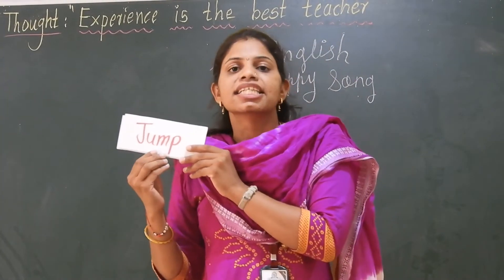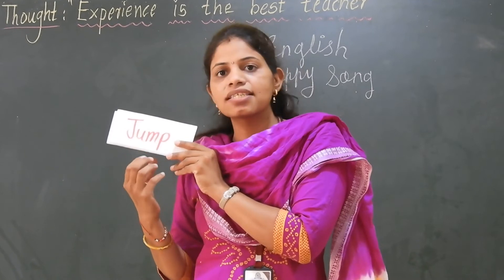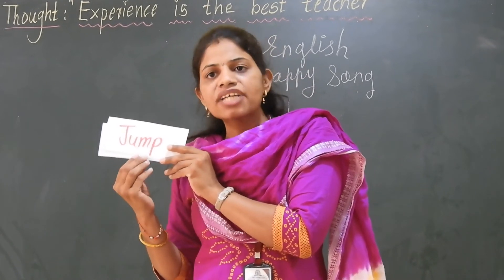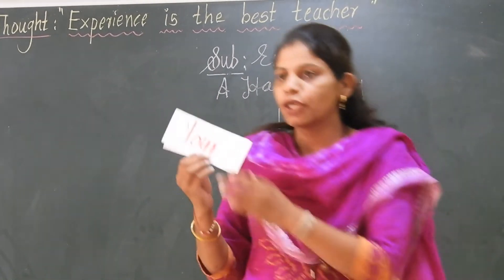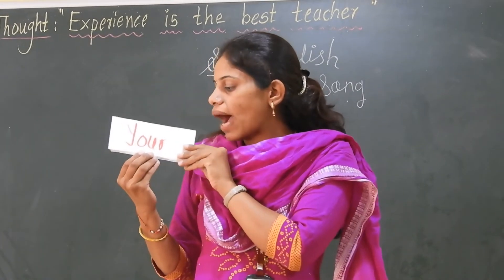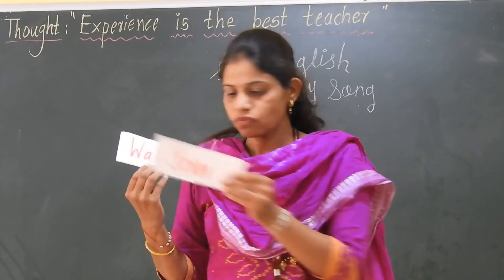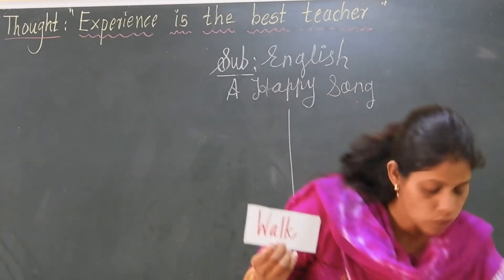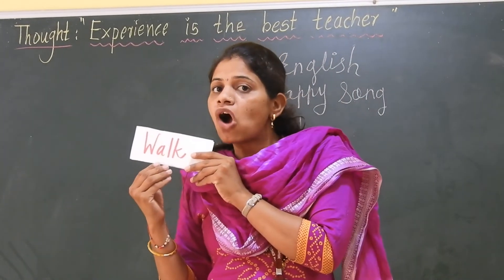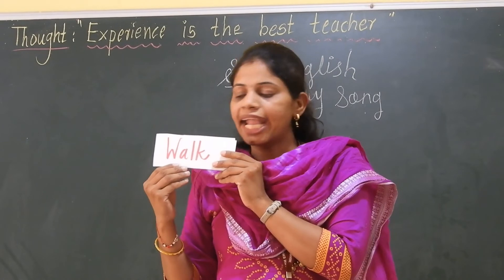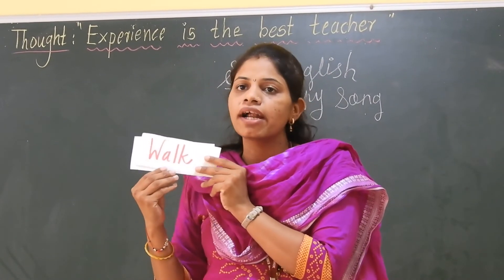Jump. J, U, M, P. Jump. This is an action word. Next, you are. Walk. What is the spelling of walk? W, A, L, K. Walk. This is also an action word.